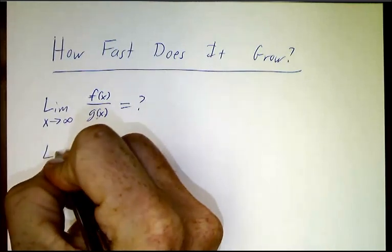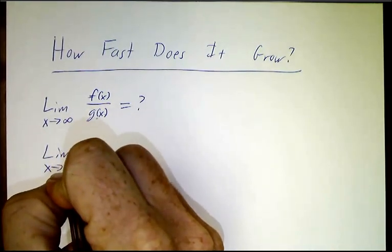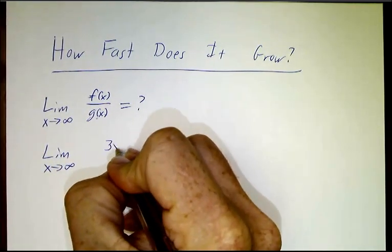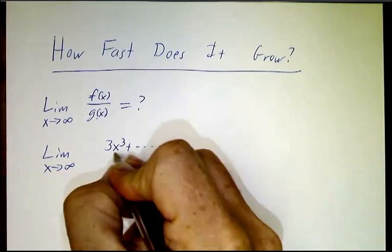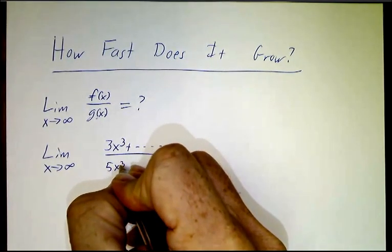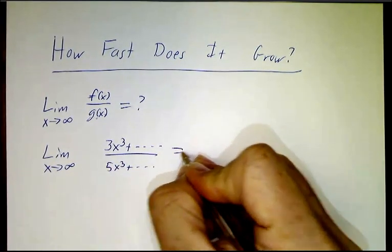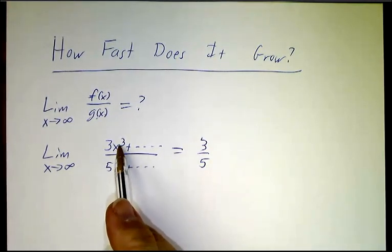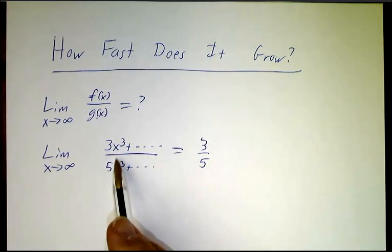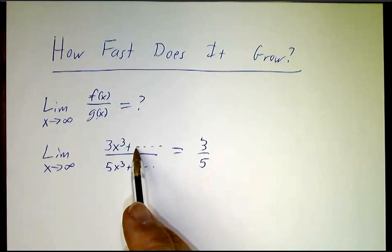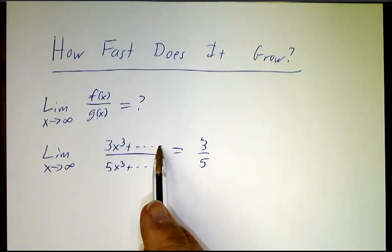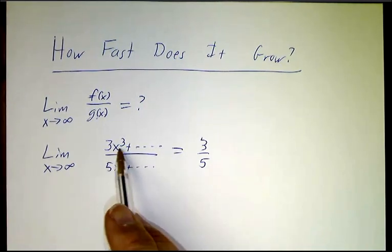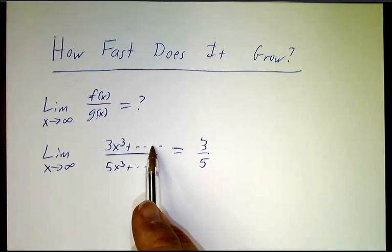So for example, we saw that if you have a polynomial, the limit as x approaches infinity of 3x³ plus stuff over 5x³ plus stuff is going to be 3/5 because you cancel a factor of x³ from the top and the bottom. All of these other terms, the x² terms, the x terms, the constant terms don't really matter because once you divide by x³, they're things that are going to zero.